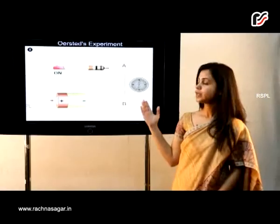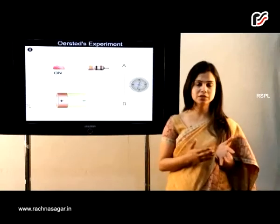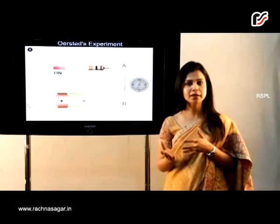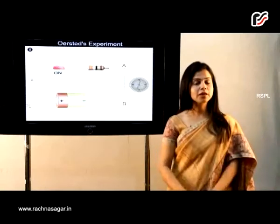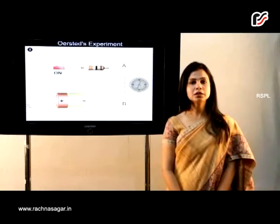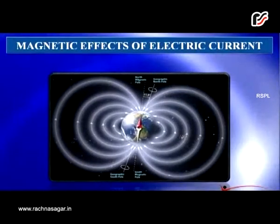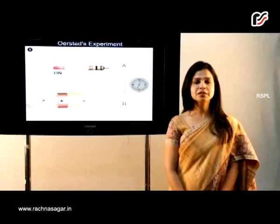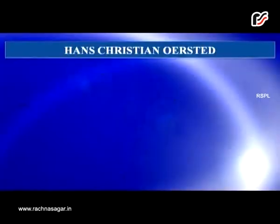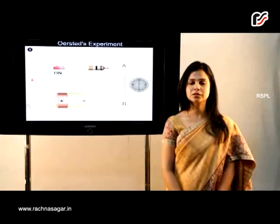This proves that there is a relationship between electricity and magnetism. Today we are going to learn the chapter Magnetic Effects of Electric Current. This phenomenon was observed by the scientist Hans Christian Oersted, and to honor the scientist, the activity you just saw was named as Oersted Experiment.